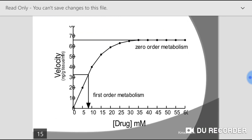Here you can see the graph for first order kinetics and zero order kinetics, showing plasma concentration of drug versus rate of elimination. In first order kinetics, it is directly proportional — if you increase the dose, rate of elimination also increases, giving a straight line. In zero-order kinetics, if you increase the dose, rate of elimination remains constant — whatever may be the plasma concentration, a constant amount of drug is eliminated from the body.